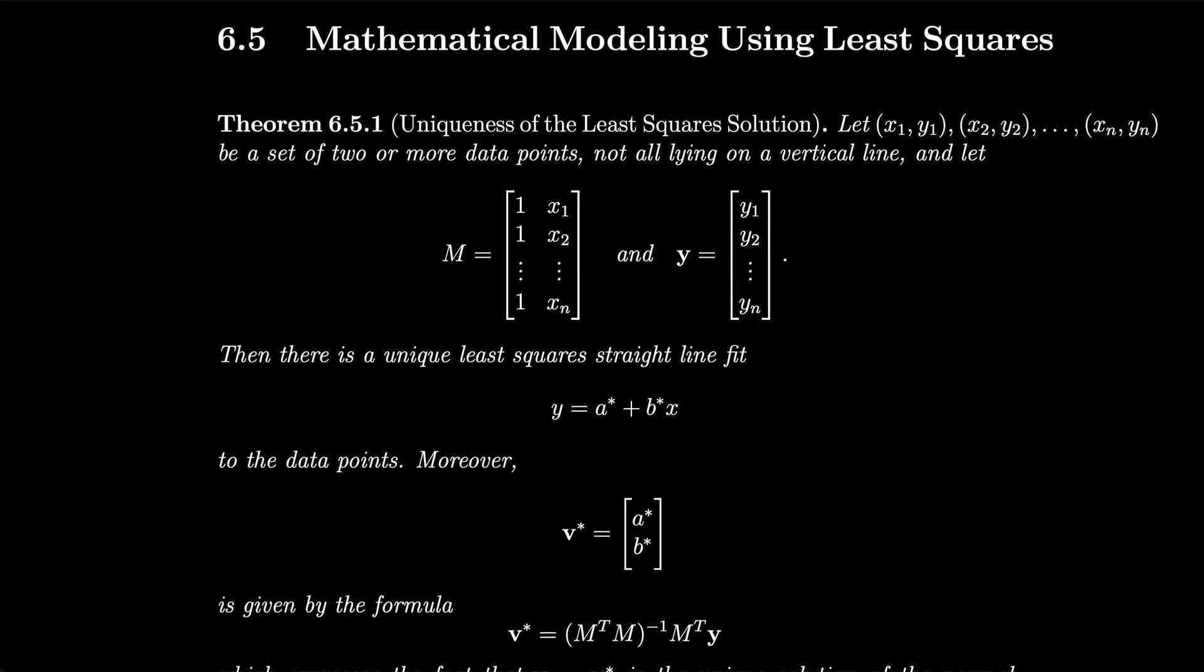It turns out that there is a unique regression line. We're going to start with this theorem that says there is a unique least squares solution. If we let (x1, y1) through (xn, yn) be a set of two or more data points not all lying on a vertical line, and we let M be this matrix composed of 1 in the first column and the x's in the second column, and then let y be all of the y values in that column.